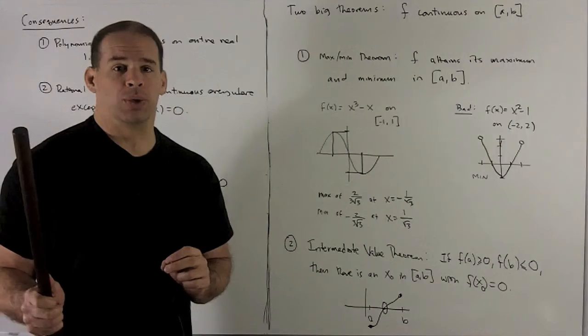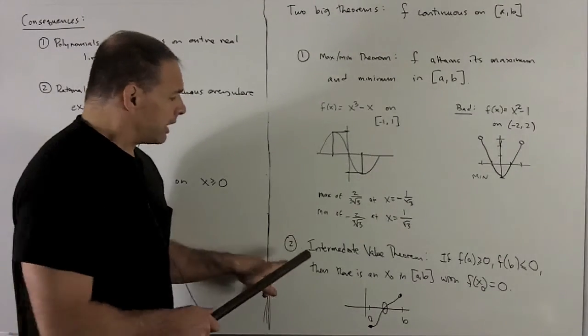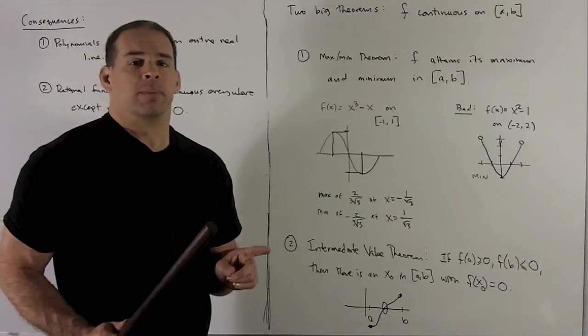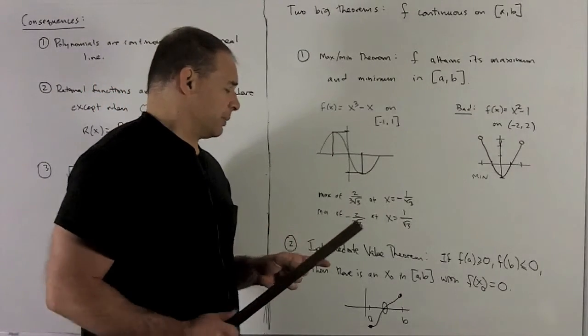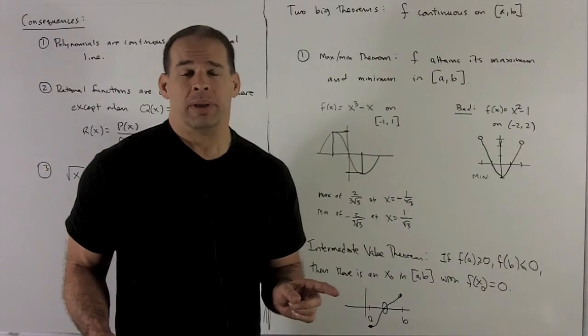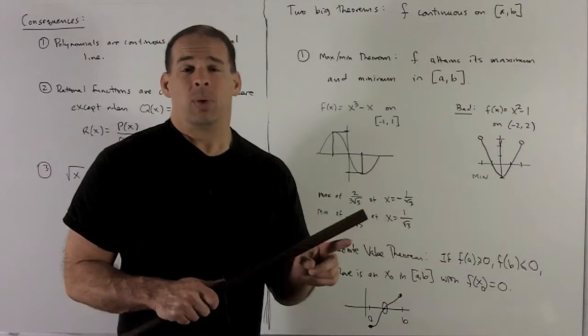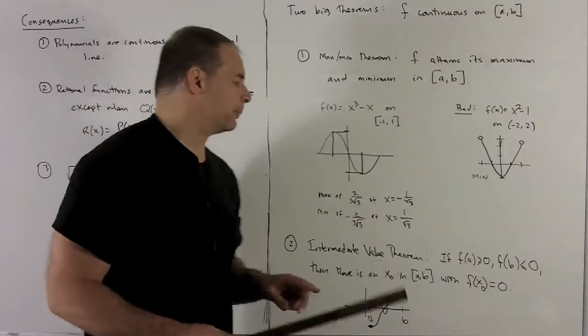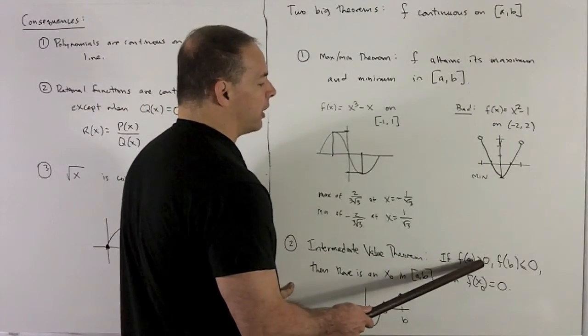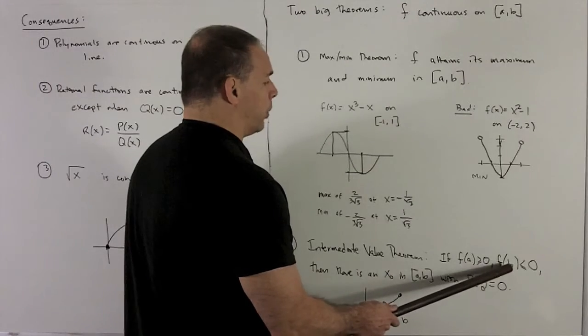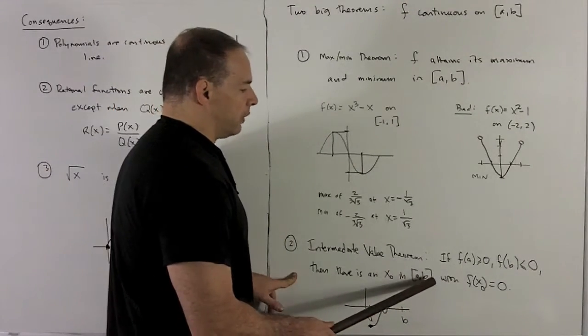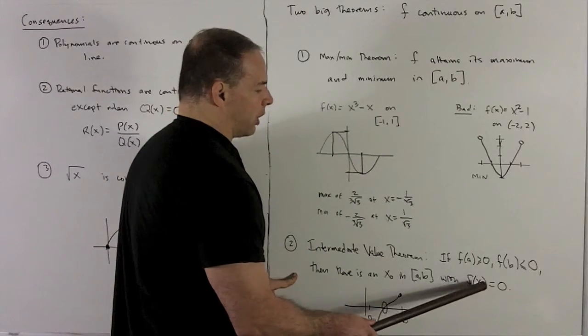Okay, another big one which we'll use a lot. Intermediate value theorem. What's this say? This says my function has positive value on one endpoint, negative value on the other endpoint. Somewhere in between, we've got to hit 0. So for instance, if I say f on endpoint A is bigger than or equal to 0, f on endpoint B is less than or equal to 0, there's an x0 in my closed interval such that f of x0 is equal to 0.